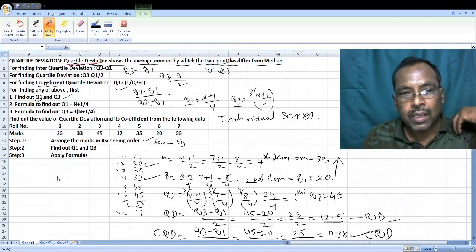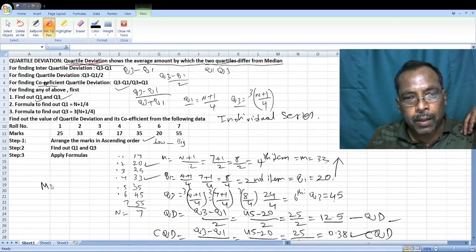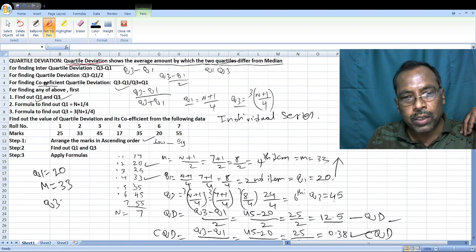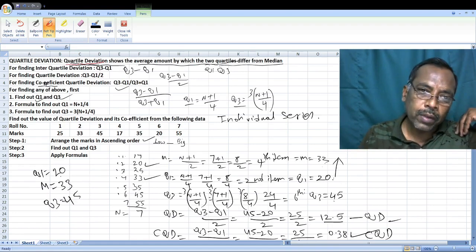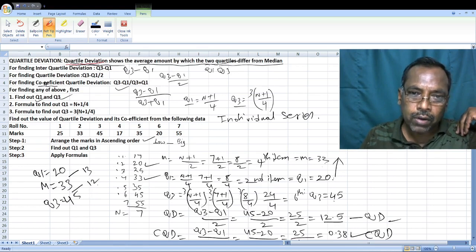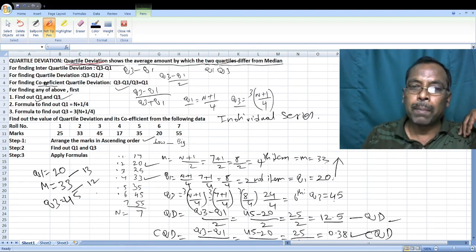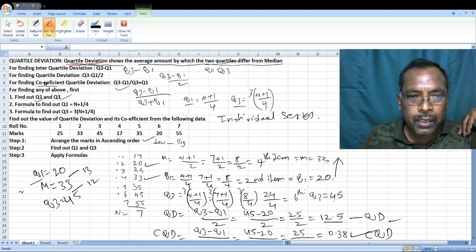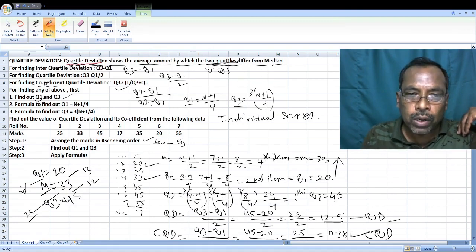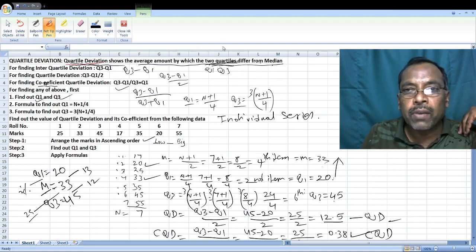Okay students, we found the median equals 33, Q1 equals 20, Q3 equals 45. Between 20 and 33, there is a difference of 13. Between 33 and 45, there is a difference of 12. So there is about 25% difference on each side. That's why the central value is the median. Quartile deviation shows the average amount by which two quartiles differ from median - how much distance Q1 is from median, how much distance Q3 is from median.